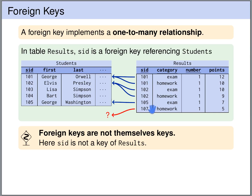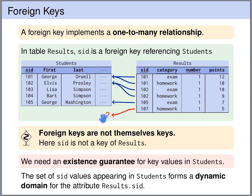So what happened here? We have a SID in the results table that does not refer to any student in the students table, and we would like to exclude this. We want to make sure that foreign key references indeed point to a valid row in the other table — an existence guarantee for the key values in students. We want the SID column in the students table to form a dynamic domain for the SID column in the results table, so we can only use SID values that also appear in the students table.